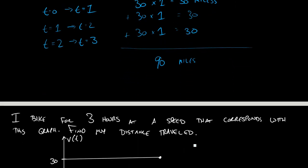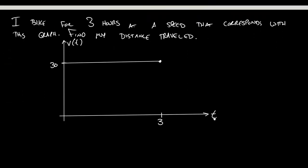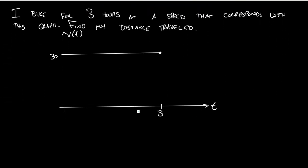So if I had a graph of this same situation, I biked for 3 hours, and this was my speed over those 3 hours, how far did I travel? Well, we remember from before that all we had to do was 30 times 3, right? And so what is actually happening in the graph here? Well, we can think about,